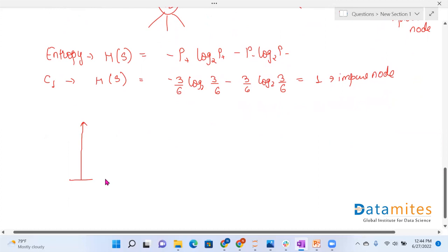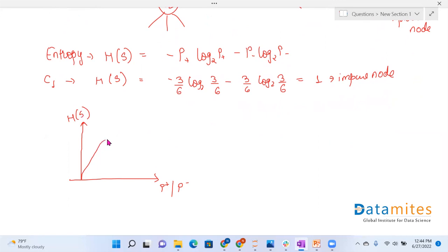Let's visualize this with the help of graph. On x axis, we have probability of either yes or no. And on y axis, we have entropy. The graph will be something like this. At 0.5, we have highest entropy that is 1. And please keep in mind the range of entropy is from 0 to 1.